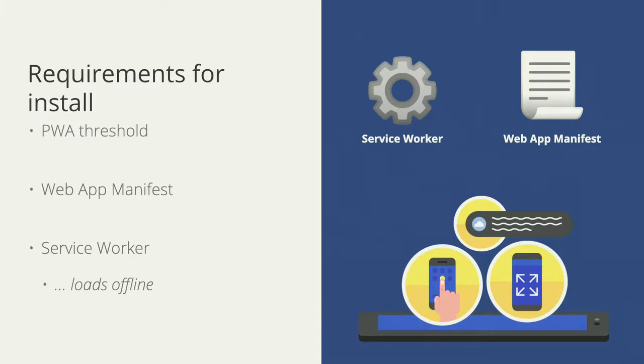The basic requirements for supporting an installable web experience are to have a web app manifest and a service worker. These are well documented and are the same requirements to be classified as a Progressive Web App — and that's no coincidence. In this talk, I'll mostly cover the manifest. For the service worker, the requirement for install is that the experience works offline, so if the user opens the app from the home screen, they'll have some kind of experience waiting for them.